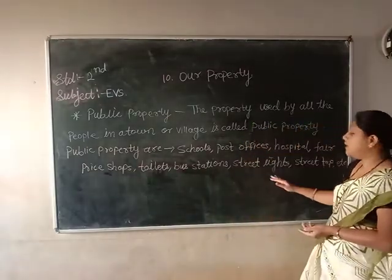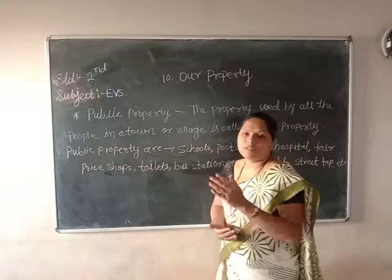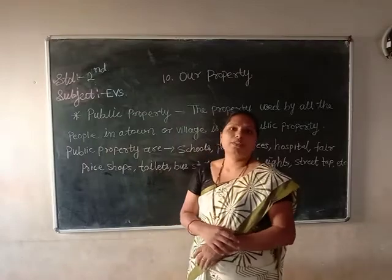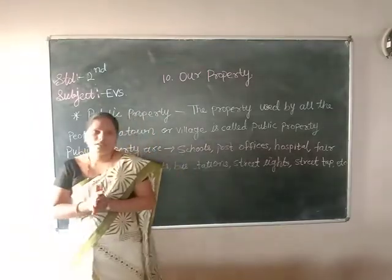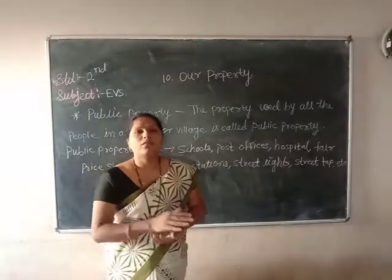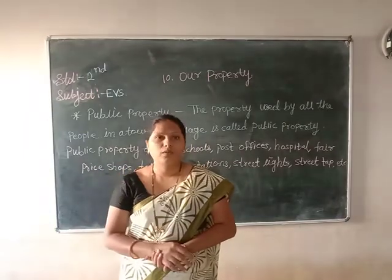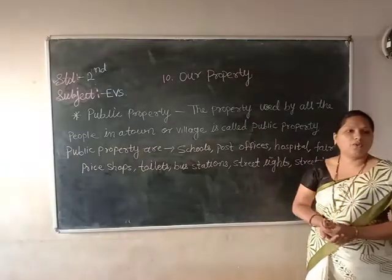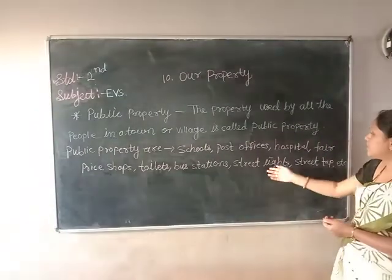Next one: street lights, which means road lights. At every short distance — maybe half a kilometer — there may be a street light along the road. We need street lights because during the night time, while we are walking on the road, we can see the road safely. If there is no light, we can't see the road properly. That's why we use street lights.